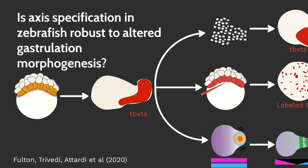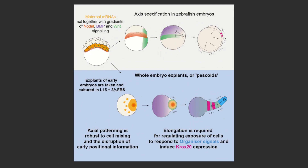Together, these results highlight how robust pattern formation is to cell rearrangement in early development. They suggest that the global cell movements leading to embryo elongation may themselves be important for patterning embryonic axes. This highlights the importance of improving our understanding of the complex interplay between cell specification and morphogenesis to gain a complete picture of body plan formation in vertebrate embryos.